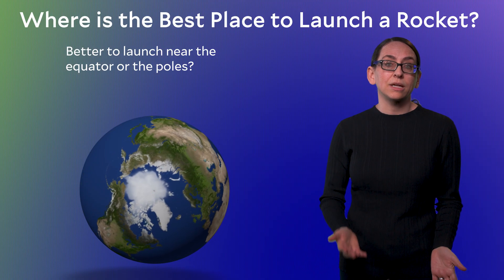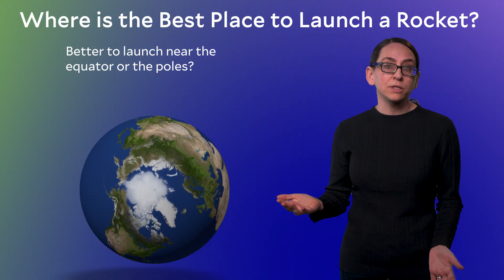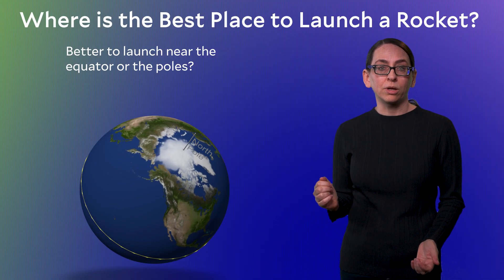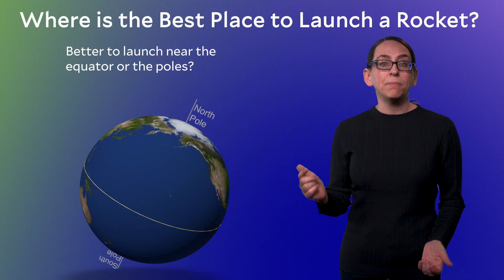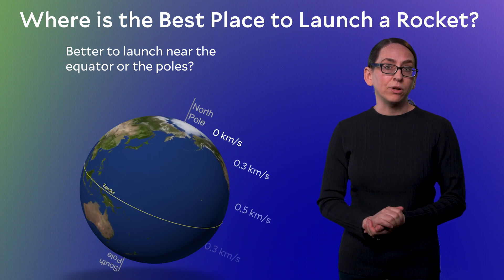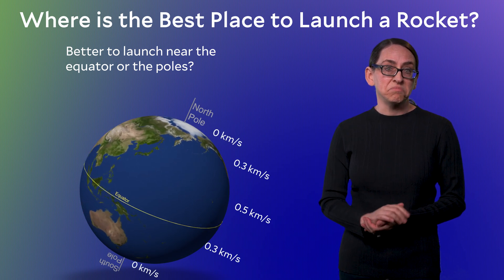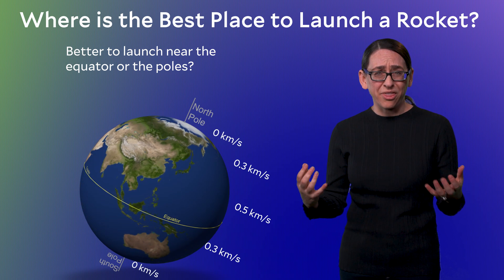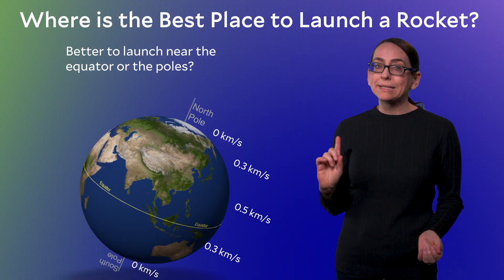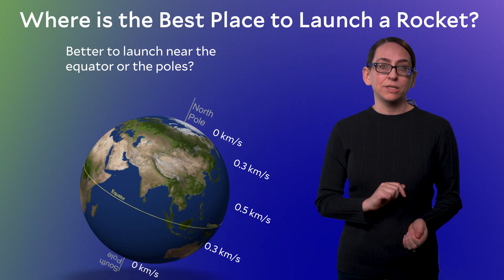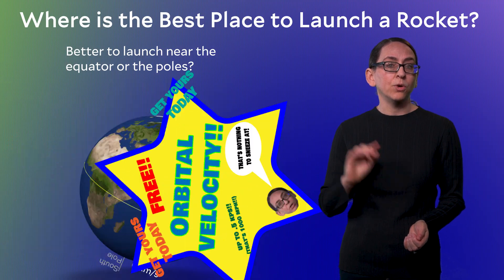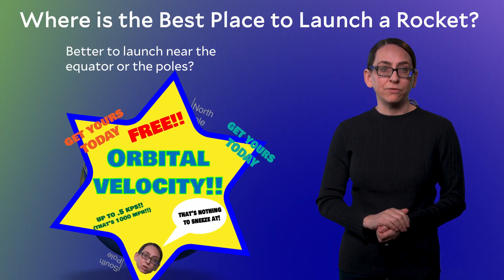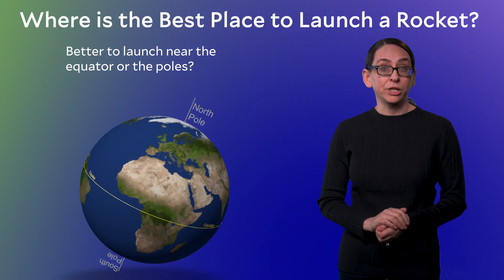And if we calculate this: at the poles the speed is zero, increasing to about 0.3–0.4 kilometers per second at mid-latitudes, and the maximum at the equator is half a kilometer a second. Half a kilometer a second is nothing to sneeze at — that's a thousand miles an hour — and we would definitely be interested in taking that for free. So save that thought: free orbital velocity is available by launching near the equator.